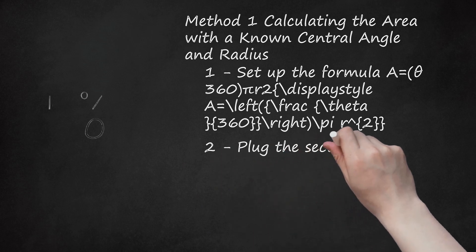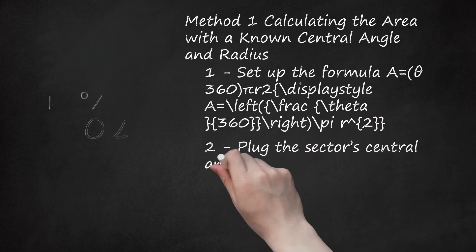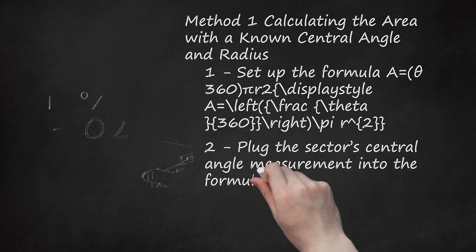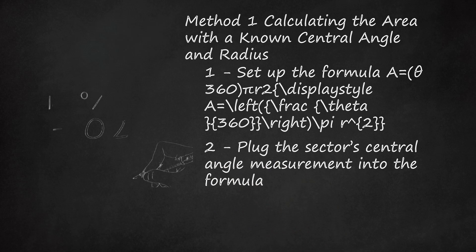Step 2: Plug the sector's central angle measurement into the formula. Divide the central angle by 360. Doing this will give you what fraction or percent of the entire circle the sector represents. For example, if the central angle is 100 degrees, you will divide 100 by 360 to get 0.28.